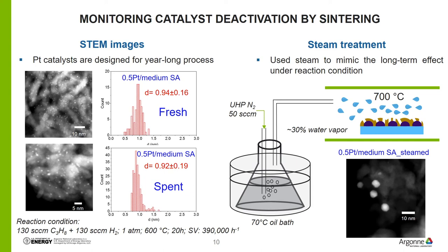This TEM image shows the Pt particle size for the fresh catalyst is 0.94 nm on the medium surface area support catalyst. After 20 hours under reaction conditions, the average particle size for the spent catalyst is 0.92 nm, so there is no Pt nanoparticle size change. For the uncoated catalyst, we realized that those catalysts from UOP were designed for a year-long process. So steam treatment was used to force the Pt nanoparticles to sinter, mimicking the long-term effect under reaction conditions.